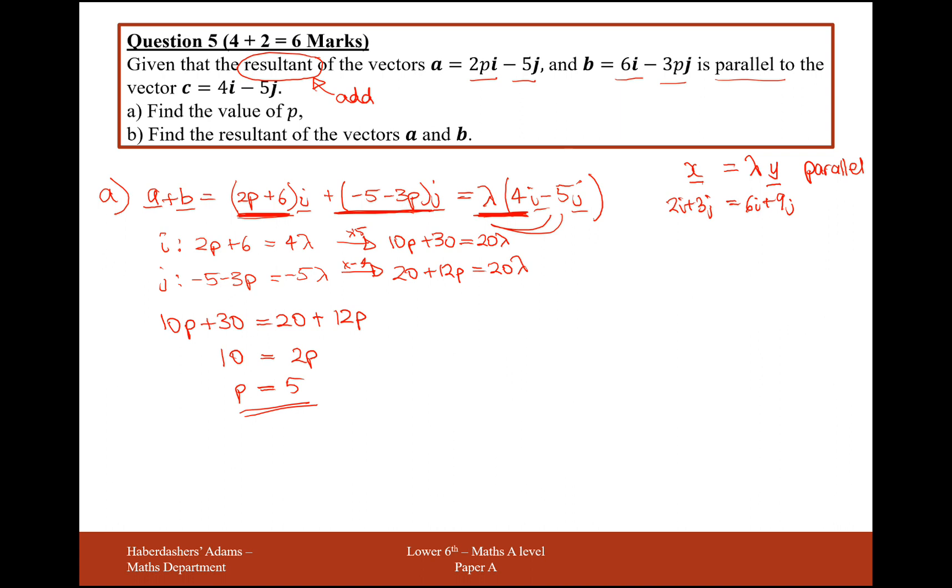Part b is find the resultant of the vectors a and b. So part b is just going to be plug p back into this vector here. So 5, that's 10, that's 16i. And plugging 5 in here, that would be minus 15, minus 20j.